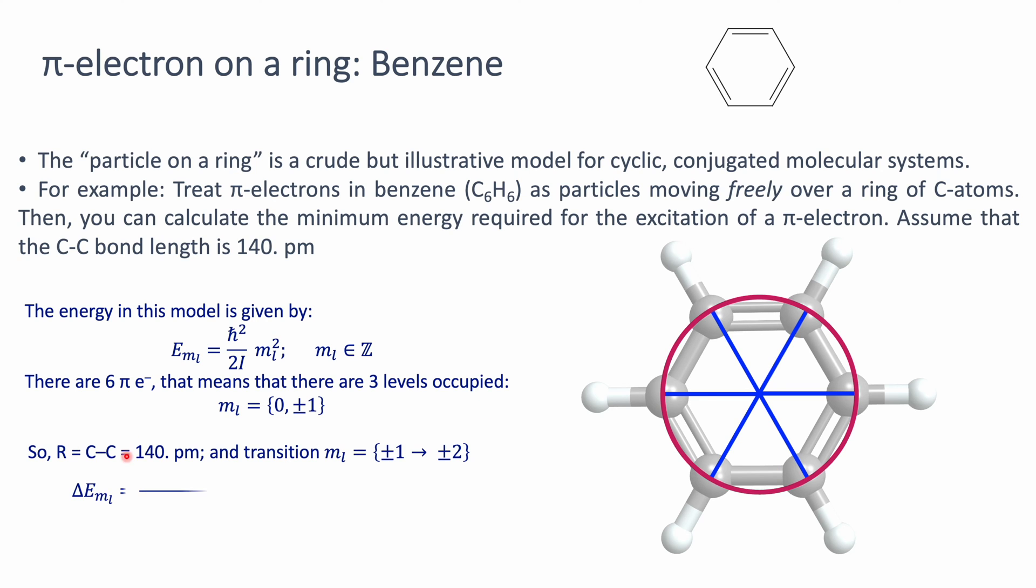The transition is going to occur between principal quantum number plus-minus one to plus-minus two. To calculate the change in energy, the highest occupied level is plus-minus one, the next level is plus-minus two, so plus-minus two is the final minus plus-minus one being the initial. When we do all the substitutions—2 times the mass of the electron times r squared—we find that the energy corresponding to that minimum energy transition is 9.34 × 10^-19 joules.